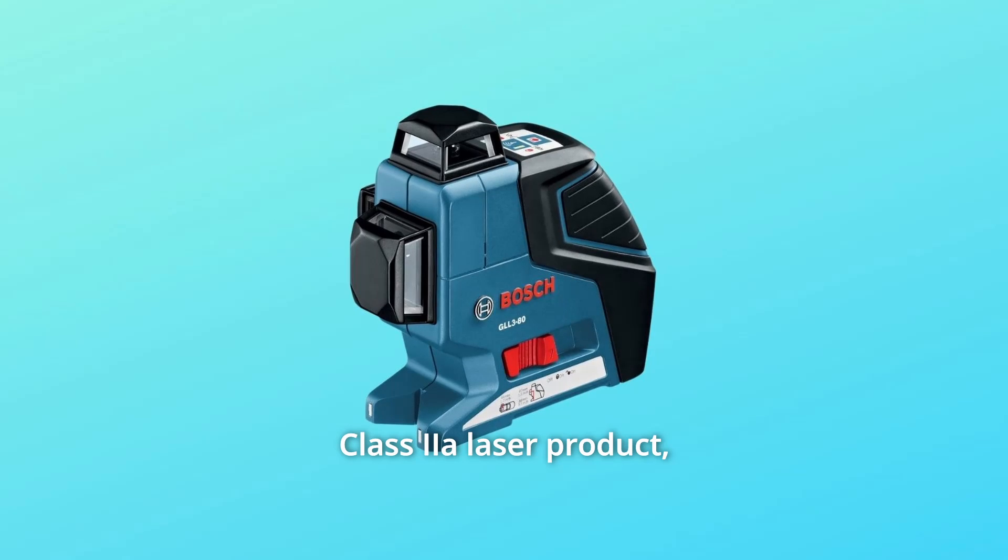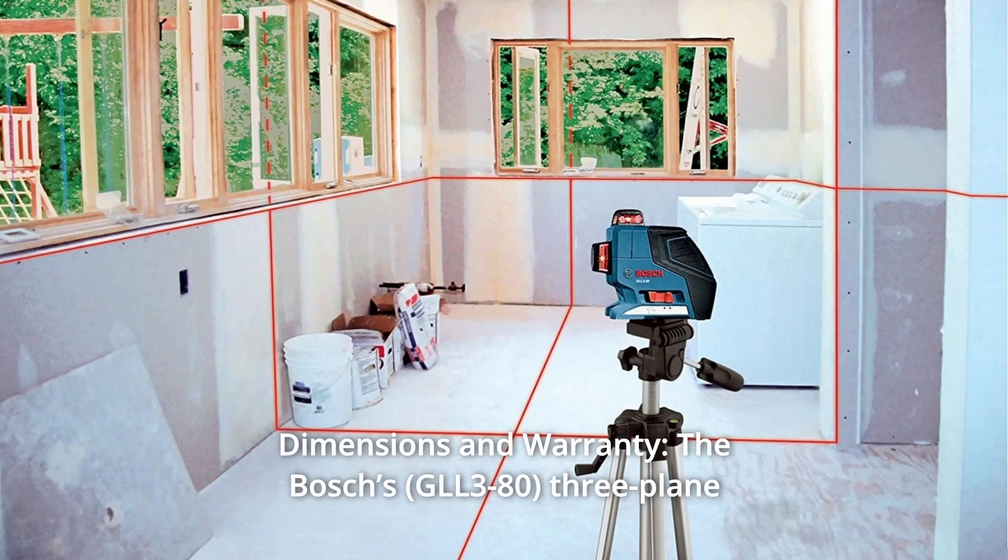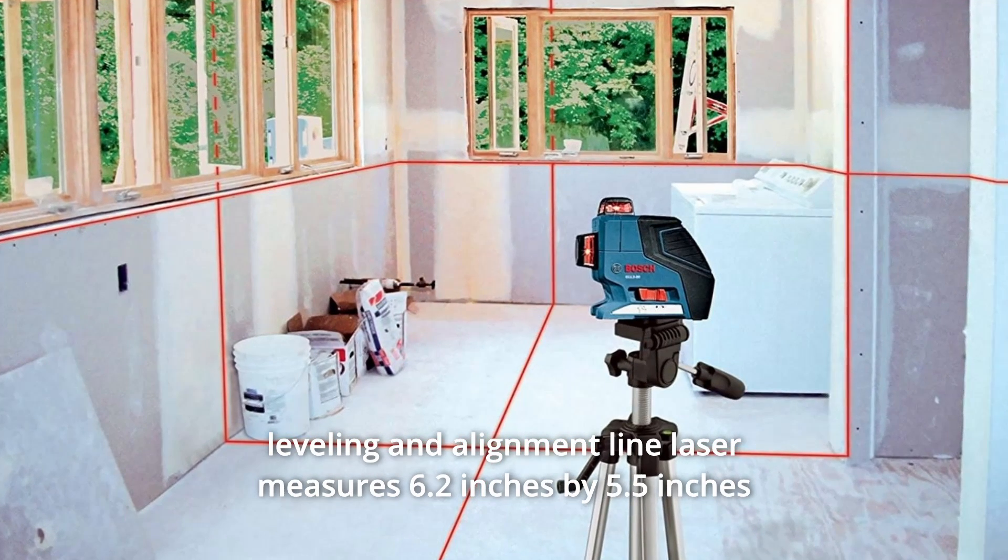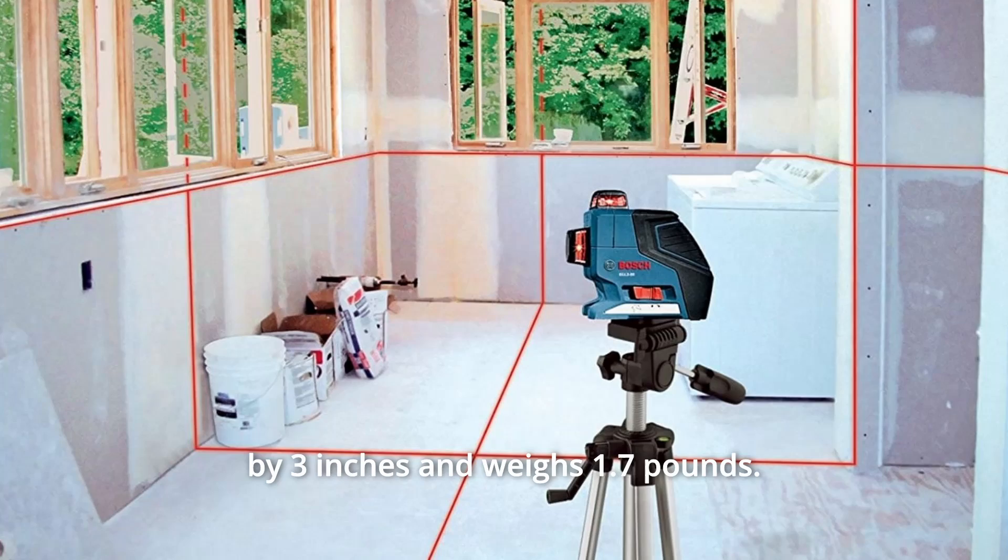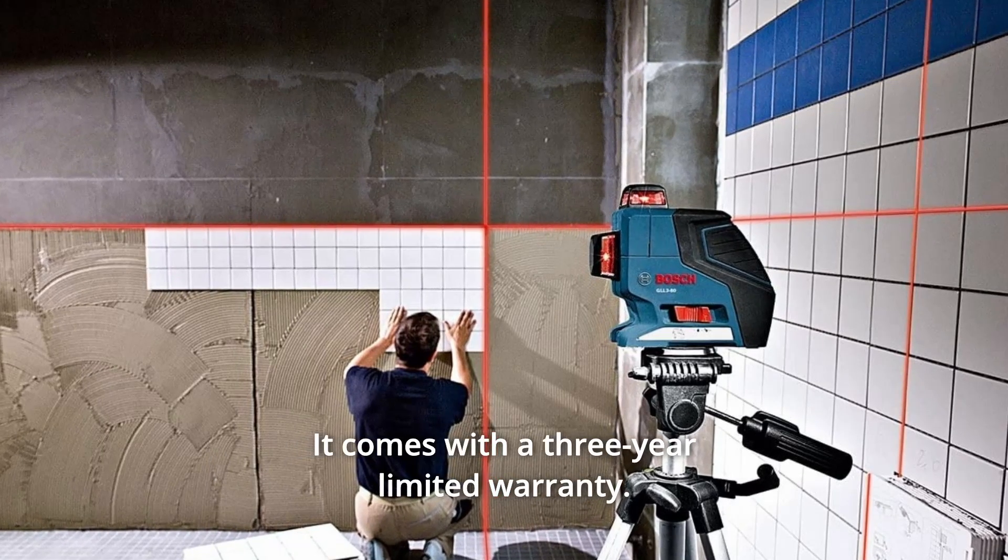Number 4: Class IIA Laser Product less than 1MW Power Output. Number 5: Dimensions and Warranty. The Bosch's three-plane leveling and alignment line laser measures 6.2 inches by 5.5 inches by 3 inches and weighs 1.7 pounds. It comes with a three-year limited warranty.